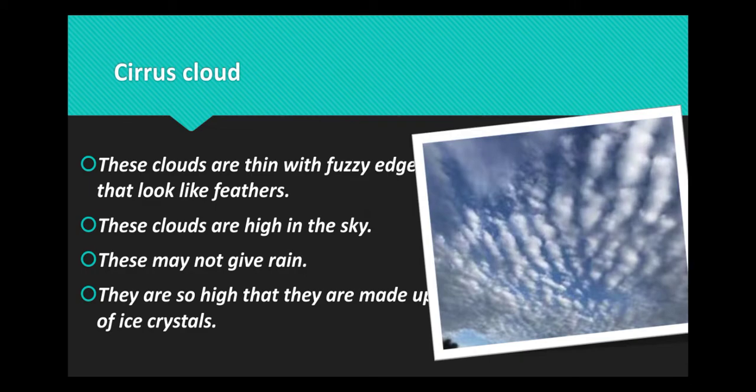Cirrus clouds are thin with a fuzzy edge that looks like a feather. These clouds are high in the sky. They may not give rain. They are so high that they are made up of ice crystals.